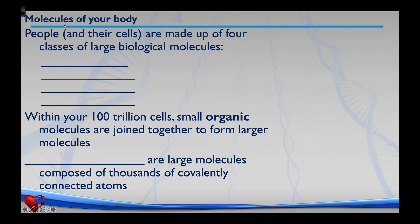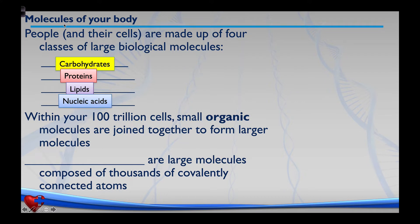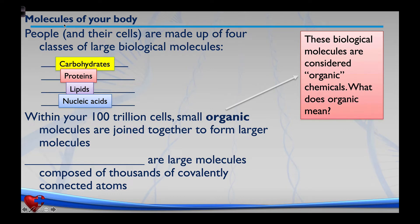Let's start talking about what your body is made of and look at some of the major molecules. People and all of your cells are made up of four classes of large biological molecules: carbohydrates, proteins, lipids, and nucleic acids. Now within your 100 trillion cells, small organic molecules are joined together to form larger molecules. In science, the word organic means these molecules contain the element carbon — carbohydrates, proteins, lipids, and nucleic acids all have a lot of carbon, and that's why they're organic.